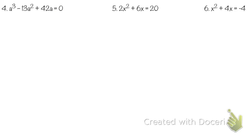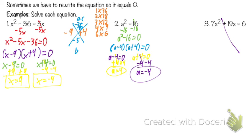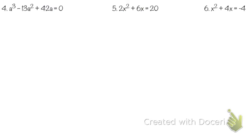Number 4: what do we notice is different? The highest exponent is 3. When you have an exponent of 2, how many answers do you get? Two. So how many answers do we suspect we might get on number 4? Three. And is it already equal to zero? Yes — but we don't have multiplication, so we need to get multiplication.